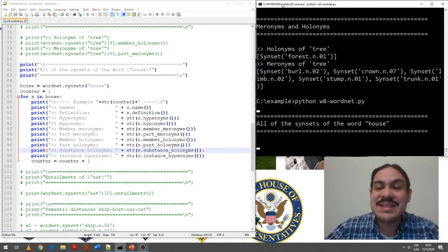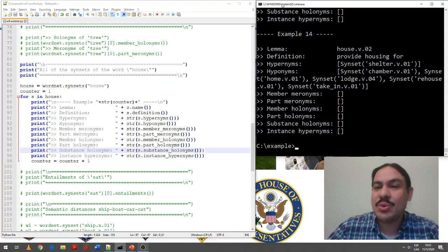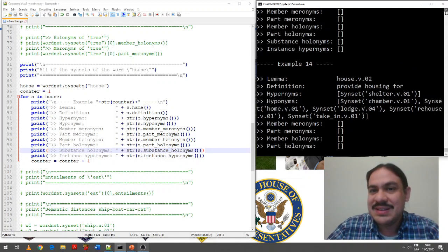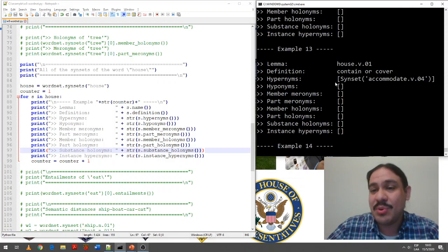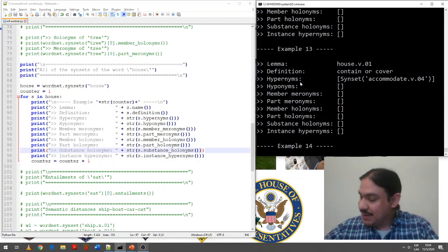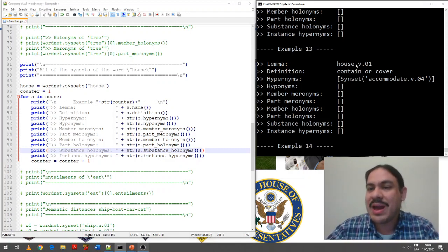So, this is going to take all of the synsets for house, and it's going to show us all of its components. So, it has 14 components. There's a verb, which is to house something, to contain it or to cover it. And it has a hypernym, so to house someone is a kind of accommodation.